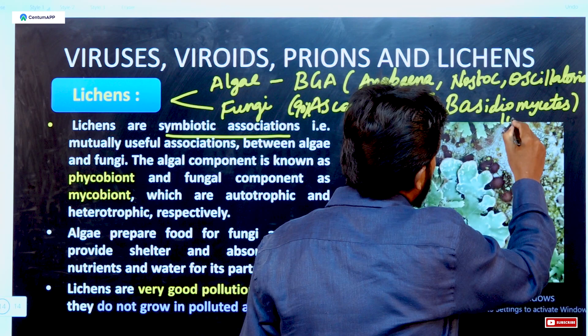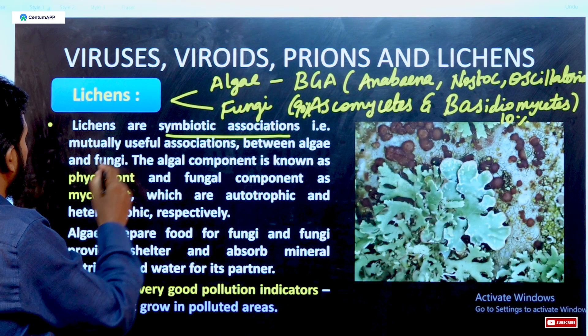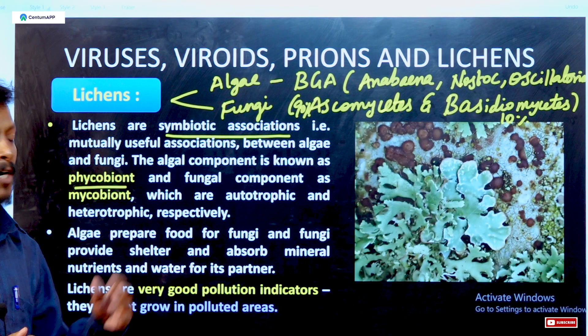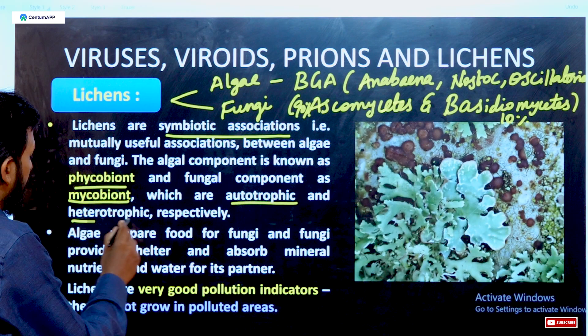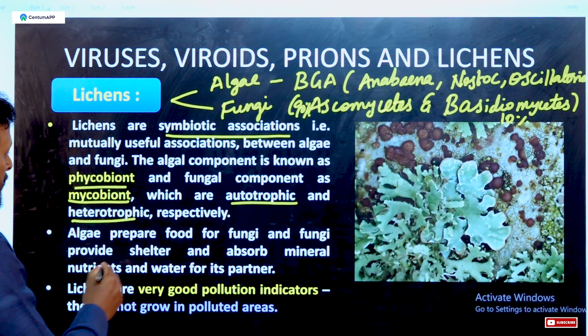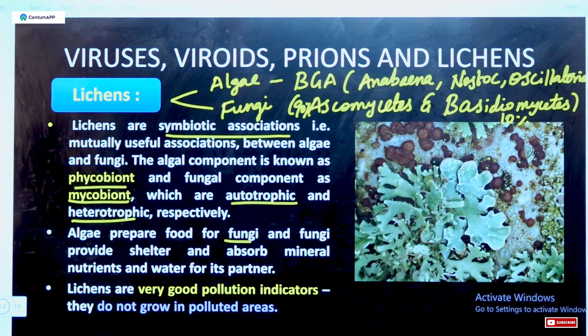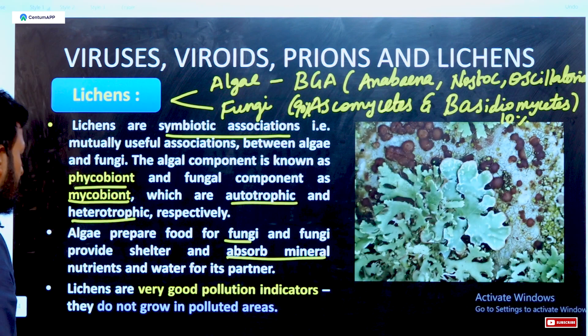Algae are called phycobionts and are autotrophic organisms — they can prepare their own food. Fungal organisms are called mycobionts and are heterotrophic, meaning they depend on other organisms. In this association, algae prepare food from sunlight which the fungi use, while fungi provide shelter, absorb minerals, and supply water. This mutual benefit defines Lichens.